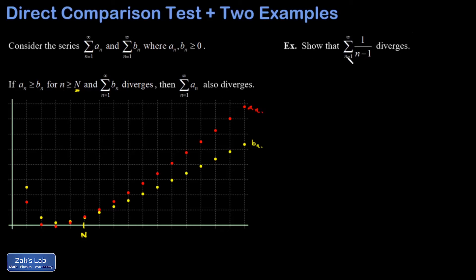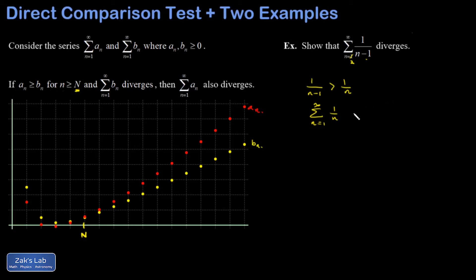Let's apply this to a straightforward example: the sum of 1 over (N minus 1). There's a slight issue — at N equals 1, you get 1 over 0 and the whole thing explodes, so I don't want it to diverge for that reason. So I start at N equals 2 instead. It doesn't really matter what's going on in the first few N's; what we care about is the long-run behavior. This looks a lot like the harmonic series, which I know diverges. By subtracting 1 from the denominator, I'm making that fraction bigger than 1 over N. So: 1 over (N minus 1) is bigger than 1 over N because its denominator is smaller. The harmonic series 1 over N diverges. Therefore, the sum from N equals 2 to infinity of 1 over (N minus 1) diverges as well.